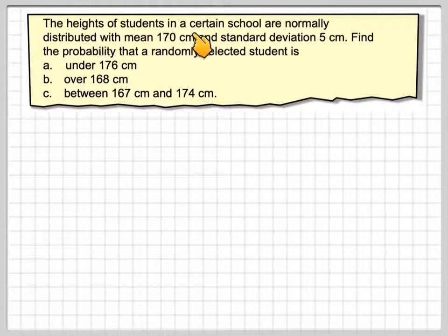The heights of students in a certain school are normally distributed with a mean 170 and a standard deviation 5. Find the probability that a randomly selected student is under 176 centimeters.